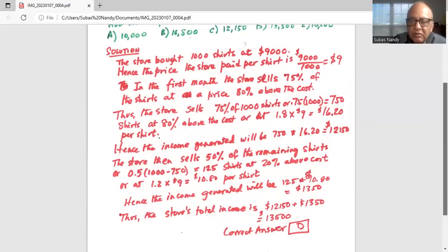Hence, the income generated will be 125 times $10.80, which is $1,350. Thus, the store's gross income is $12,150 plus $1,350, which is $13,500.